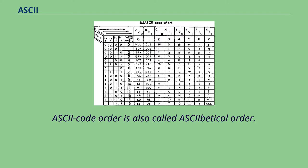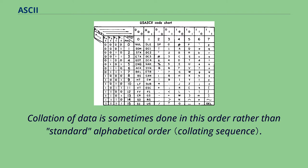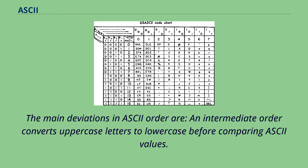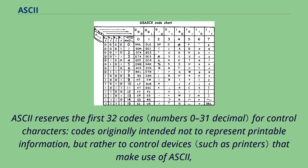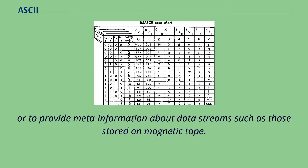ASCII code order is also called ASCIIbetical order. Collation of data is sometimes done in this order rather than standard alphabetical order. The main deviations in ASCII order include an intermediate order that converts uppercase letters to lowercase before comparing ASCII values. ASCII reserves the first 32 codes for control characters — codes originally intended not to represent printable information, but rather to control devices that make use of ASCII, or to provide meta-information about data streams such as those stored on magnetic tape.